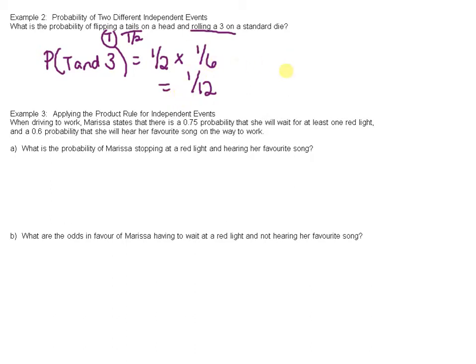If you wanted to see that in a tree diagram, you could put tails: one, two, three, four, five, six. So there's six different outcomes when you flip a tails, and one, two, three, four, five, six different outcomes when you flip a heads. But the only one that we actually want is tails and three. So this is the only outcome that we want. So it's one outcome out of a possible twelve. And that's how you can see it visually.